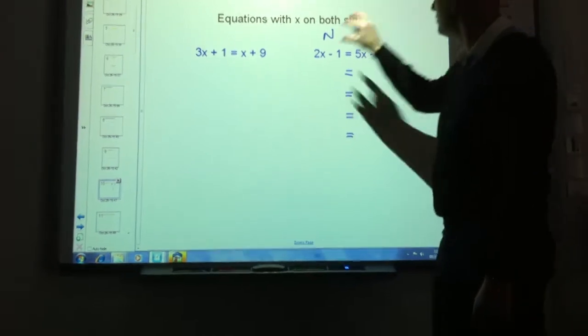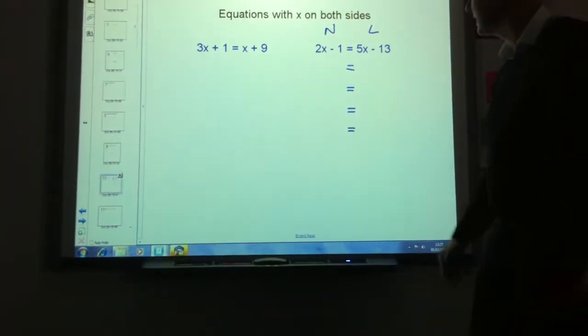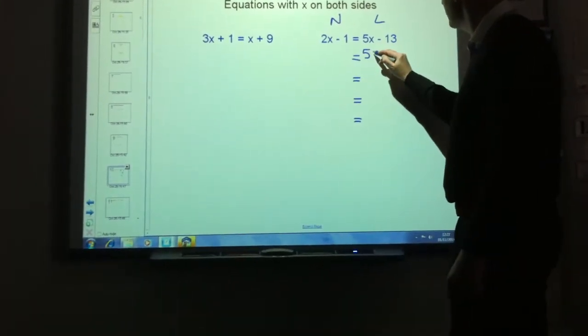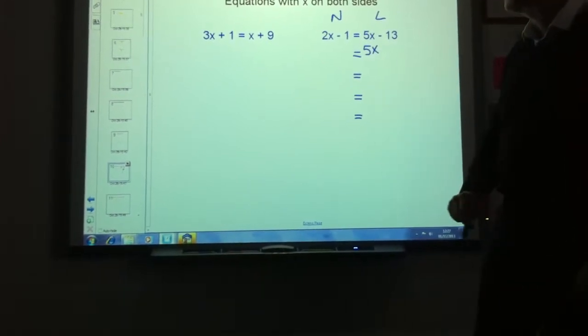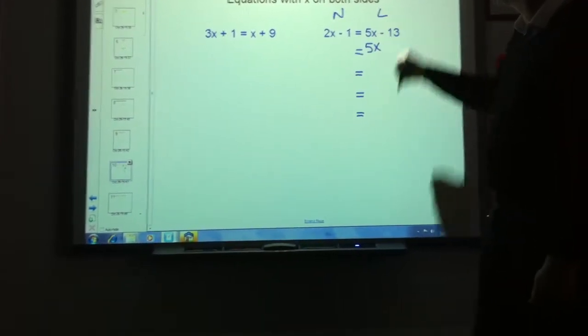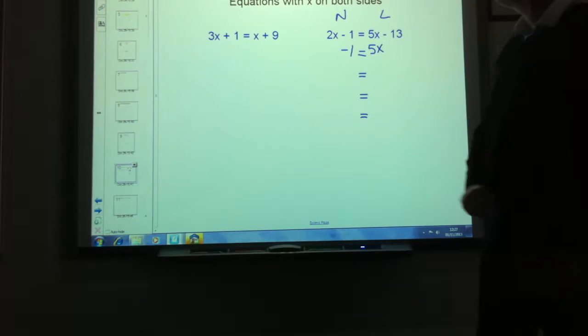So letters are going on this side, numbers on this side, keep your working out neat again. Leave the things in the place where they belong, if they're in the right place. Five x is in the letters bit, minus one is in the numbers bit.